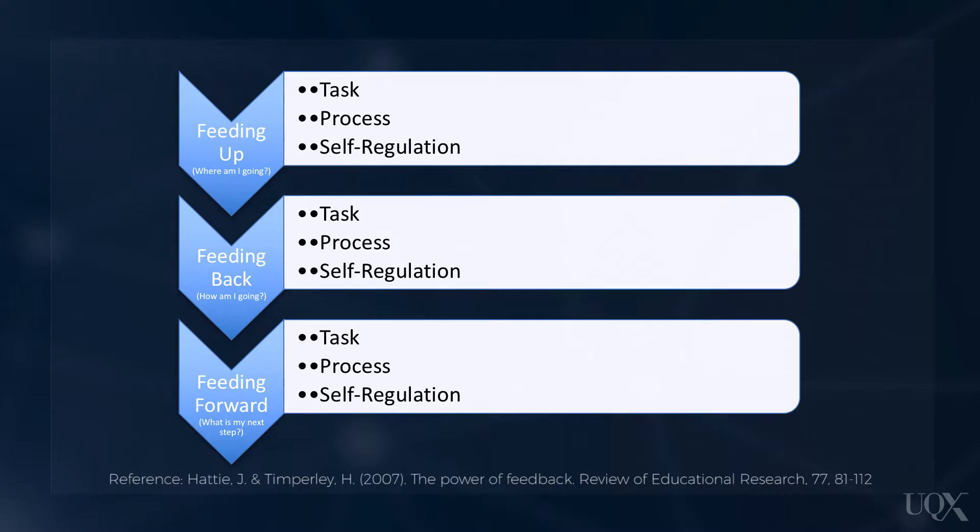This suggests that in order for learners to receive feedback information, particularly on how they're going and their next step, feedback needs to be situated in a context of formative assessment. The purpose of formative assessment is to provide evidence for teachers about student achievement in order to make decisions about the next steps of instruction. Hence, the effectiveness of teachers' use of feedback may be dependent upon the assessment practices used within the learning context.